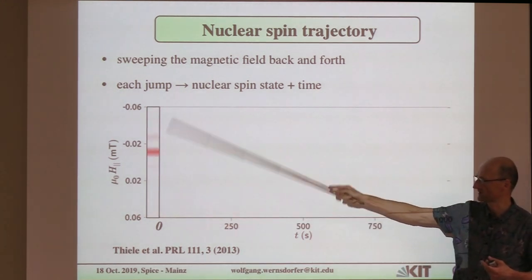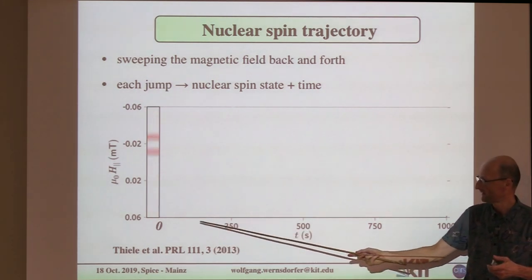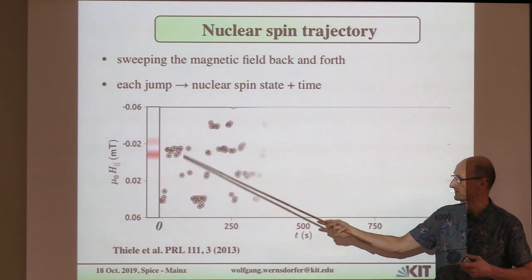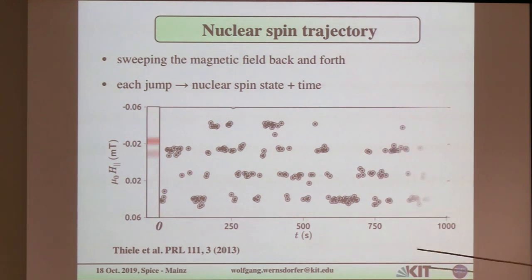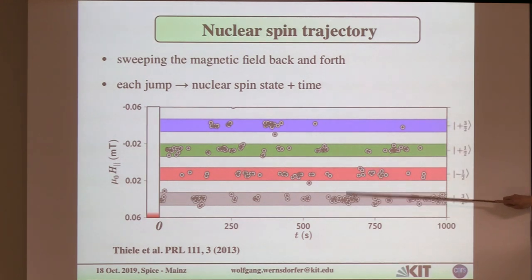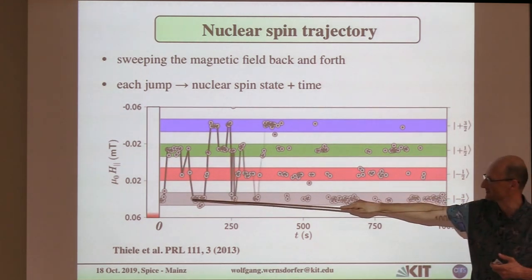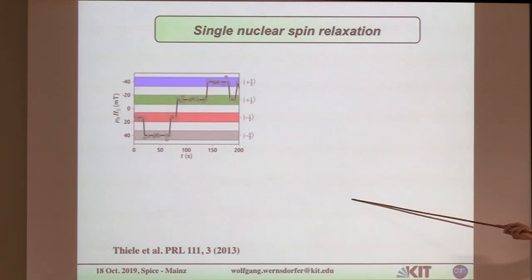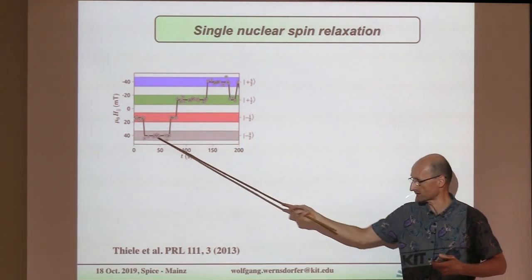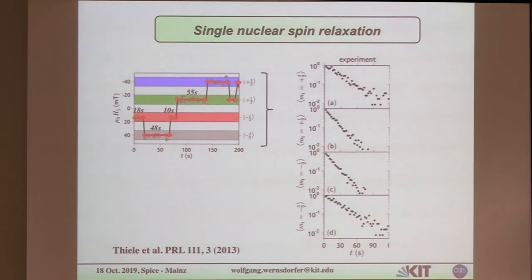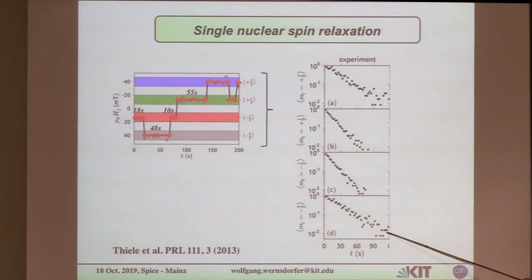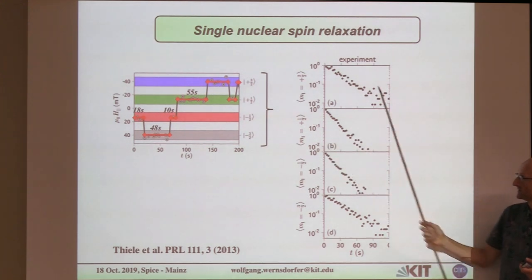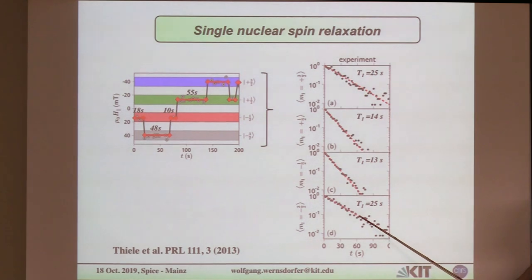Experimentally, what we do is scan the field up and down as fast as possible, measure always these small steps — these jumps — and put points for each jump as a function of time. You see the scattering falls into bands corresponding to the four states. If I connect these points, I can see how the nuclear spin wanders around these four states. You do this over days, measure the time you stay in a certain state — this is T1 — make statistics for all states, integrate the histograms, and this gives you the probability to jump from one state to the other.